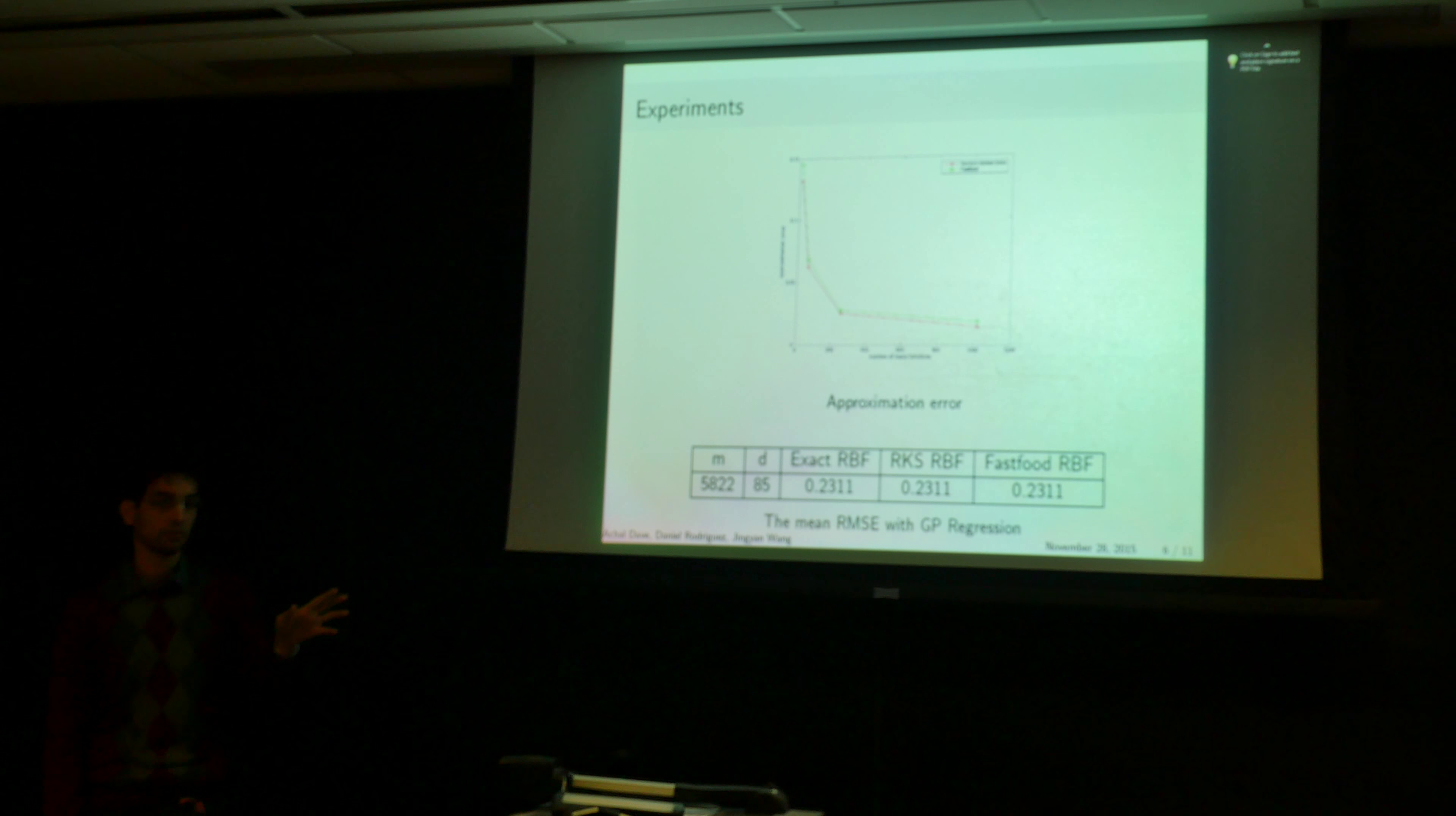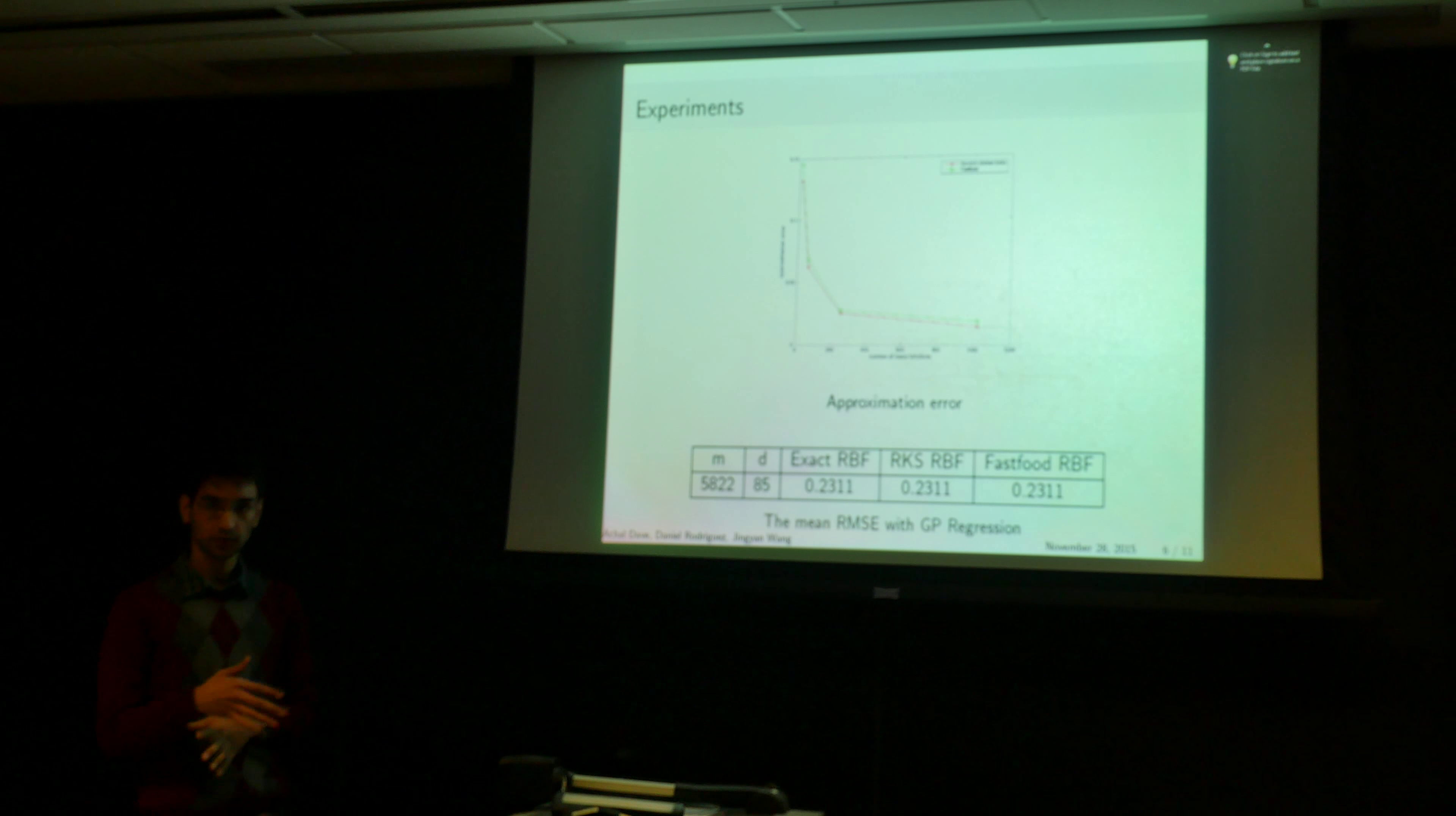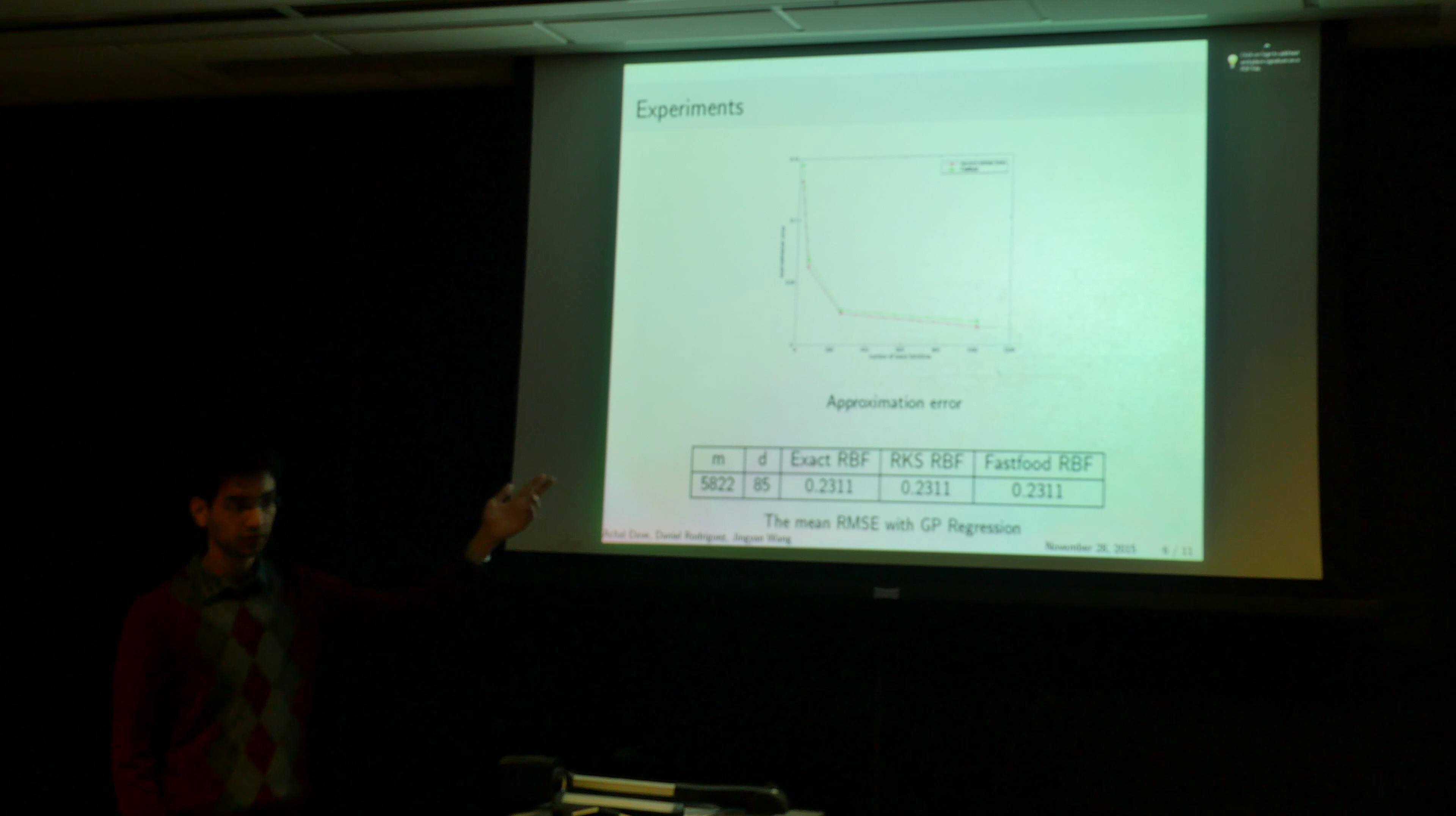So now I'll talk a little bit about the experiments. The first experiment we did was basically looking at the approximation error of the kernels. So you can get a kernel approximation from RKS, or random kitchen sinks, and a kernel approximation from fast food. And as you increase the number of basis functions, you see that the approximation error goes down.